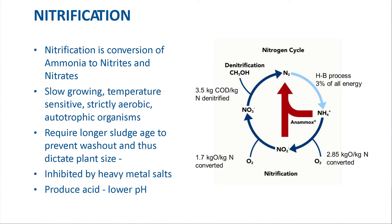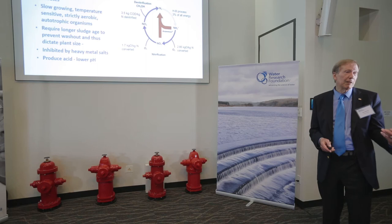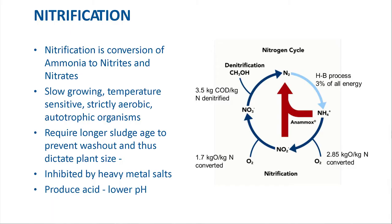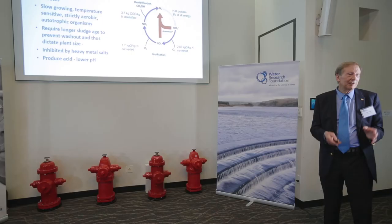Nitrification is the conversion of ammonia to nitrite and nitrate, done by slow-growing organisms. They are very sensitive, strictly aerobic, and autotrophic, which means they use carbon dioxide as their basic building block. So it takes them longer to grow, and they require a longer sludge age. Most of our nitrogen fertilizer today is produced by the Haber-Bosch process, which is very, very energy intensive — about 3 percent of all the energy in the world goes into just the manufacture of fertilizer.